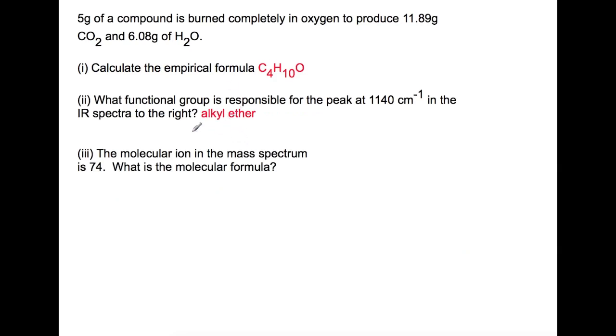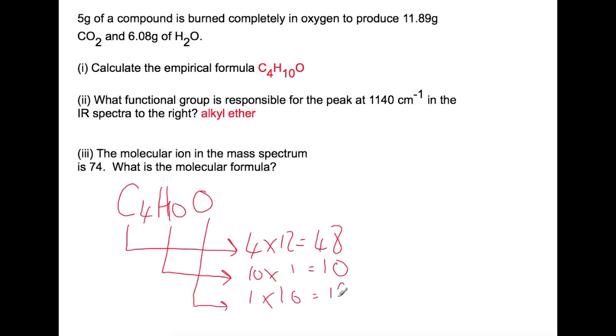Looking at part 3, we are given the molecular ion from the mass spectrum as 74. What is the molecular formula? To be able to work out the molecular formula, we use the empirical formula. Whatever your molecular formula will be a multiple of the empirical formula. If we work out the gram formula mass of our empirical formula, if we add all these values together, then we find that our gram formula mass of the empirical formula is the same as the molecular ion. That means that the multiple of the empirical formula is 1. So your molecular ion must also have a formula of C4H10O.